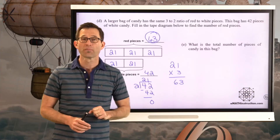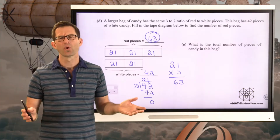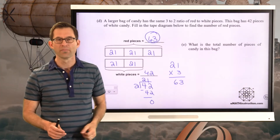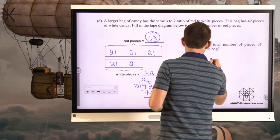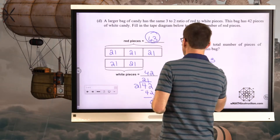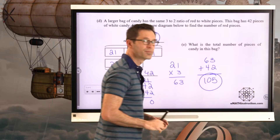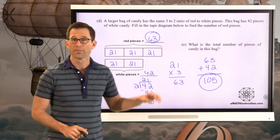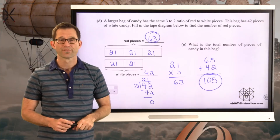Letter E asks for the total number of pieces of candy in this bag. With 63 red pieces and 42 white pieces, 63 + 42 = 105. Sometimes that's the entire problem — they give you all that information and then ask for the total.